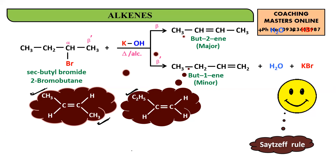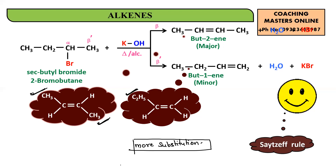So: more substitution → major product; less substitution → minor product. But-2-ene has more substitution, so but-2-ene is the major product and but-1-ene is the minor product.